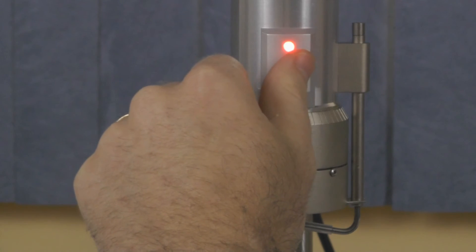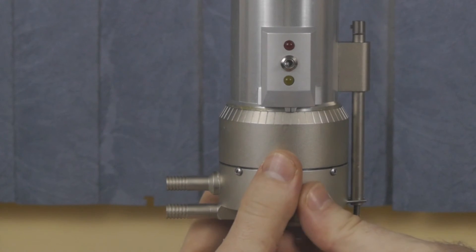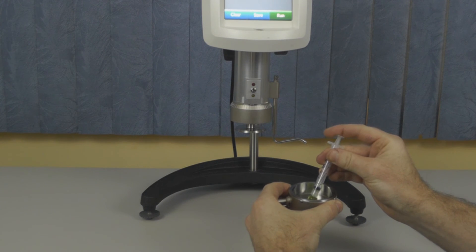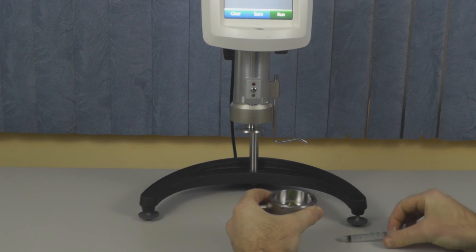You can now turn off the toggle switch, take off the sample cup, and load your sample. Once you have loaded the correct volume of sample onto your cup, you can reattach it to the instrument.